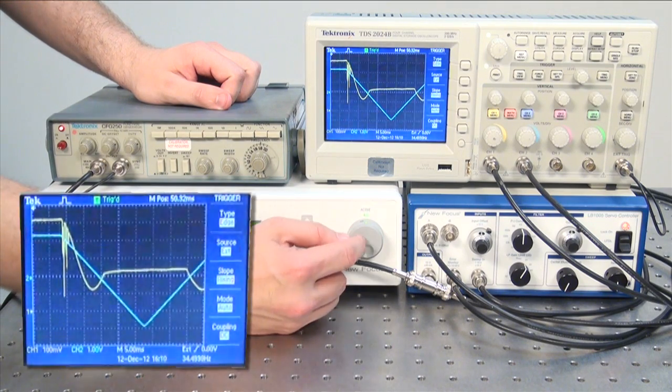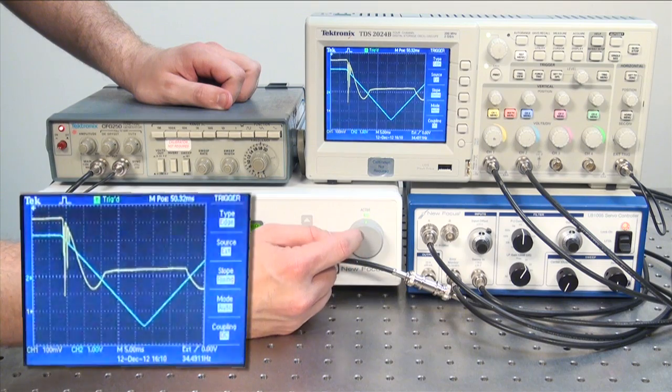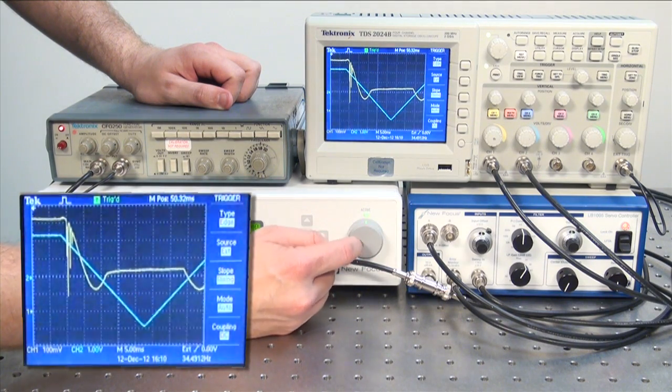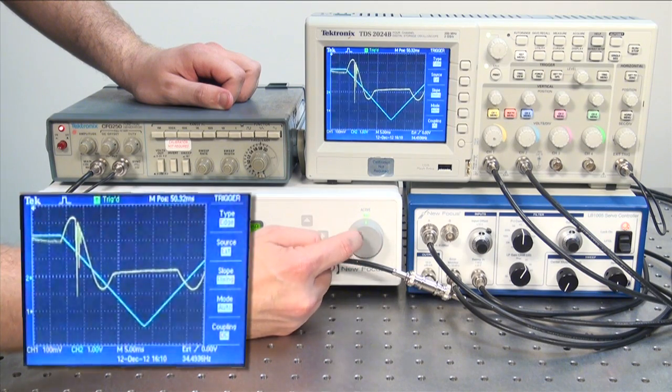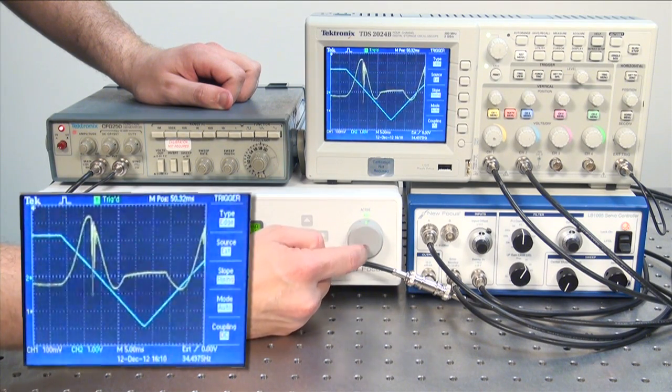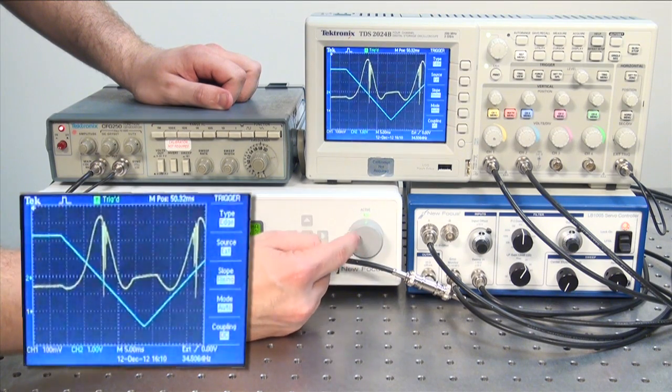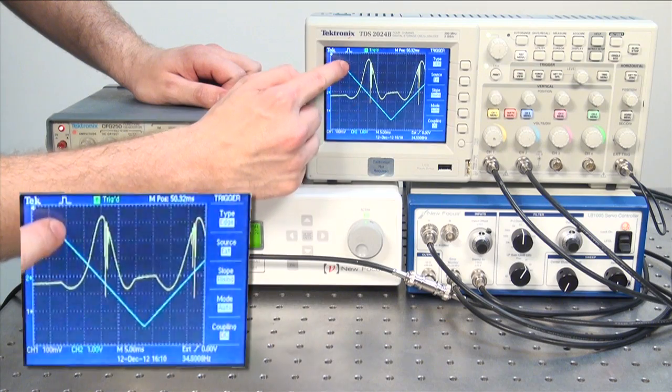Slowly raise the piezo percentage until you can see the rubidium absorption line on the center of the oscilloscope. You want the absorption line to be in the center of your sweep.